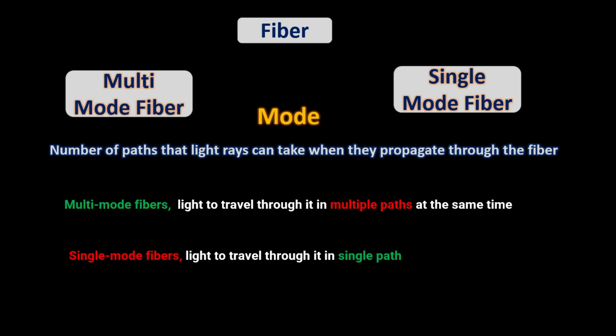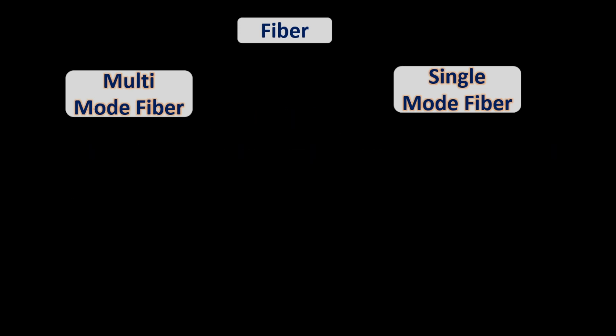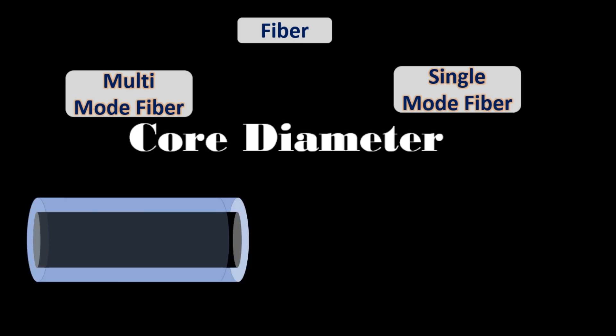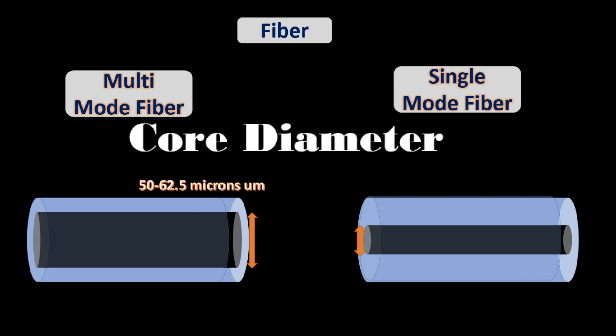The reason behind this is the different core diameter of fibers. Multi-mode fibers have a core diameter of around 50 microns or 62.5 microns, whereas in single-mode fiber the core diameter is very tiny — 8 to 10 microns.